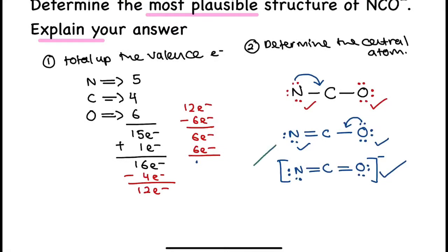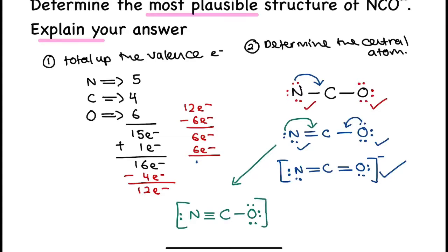The next possible structure would be: instead of oxygen giving lone pairs to form a double bond, what if nitrogen gives in another two electrons to form a triple bond? So we would have another Lewis structure whereby there is a triple bond between nitrogen and carbon, but a single bond remains between carbon and oxygen. This is the second possible Lewis structure for NCO⁻.